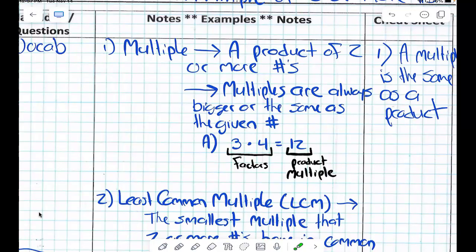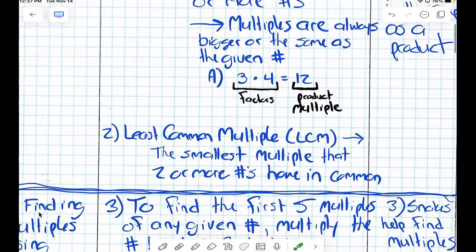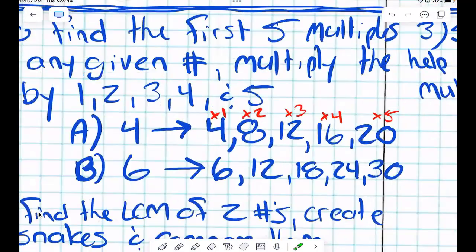So is four a, I mean sorry, is 12 a product of four? Does four go into 12? Is 12 a product or a multiple of three? Yeah, three, six, nine, 12, right. What is the abbreviation for least common multiple? LCM. All right, so here we go.